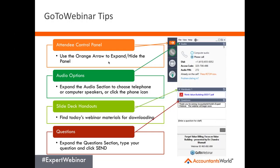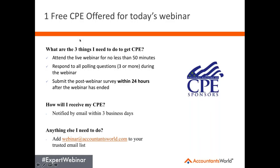A couple of quick points on the GoToWebinar control panel. You can expand and hide the control panel using the orange arrow. You can click on audio to choose either your telephone or computer speakers to listen in. If you choose phone, it'll give you a dial-in number and an access code. If you haven't downloaded Brian's slide deck, you can go under handouts and there's a PDF in there. If you have any questions for Brian or myself during the presentation, just click on the questions tab, enter your question, click send, and we'll be taking some questions during and at the end.